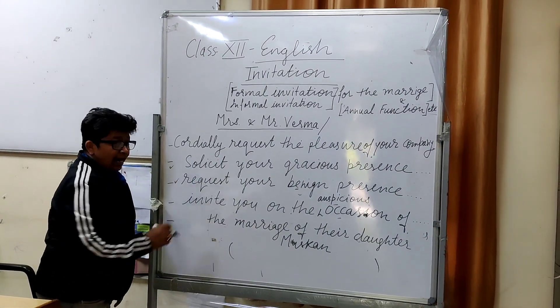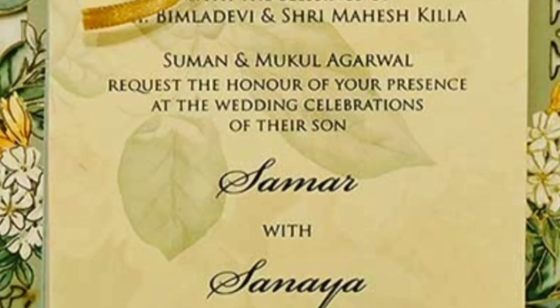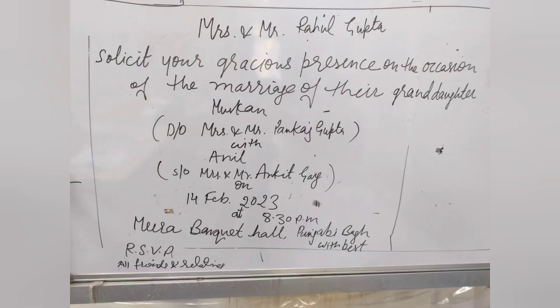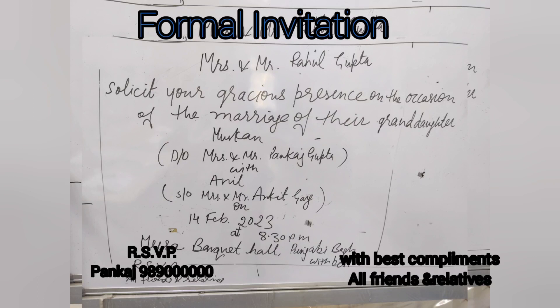If someone will not use those phrases, then you can write simply: 'Mrs. and Mr. so-and-so request your gracious presence on the wedding ceremony of their son or daughter' — whatever is given in your question. After writing the date and all the information, on your left-hand side you will write RSVP and towards your right side you will write 'with best compliments.' Under RSVP write the name and phone number, and under 'with best compliments' you will write all friends and relatives. This is the complete format of your formal invitation.